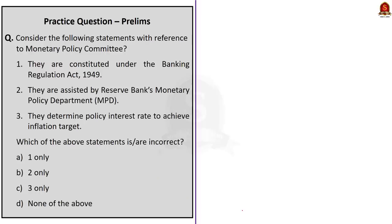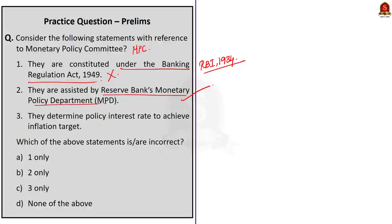The third question: consider the following statements with reference to the Monetary Policy Committee. Statement 1 — constituted under the Banking Regulation Act 1949 — is incorrect, because MPC is constituted under the RBI Act 1934. Statement 2 — assisted by the Reserve Bank's Monetary Policy Department — is correct. Statement 3 — determines policy interest rate to achieve the inflation target — is also correct. The question asks for incorrect statements, so the right option is option A — statement 1 only.